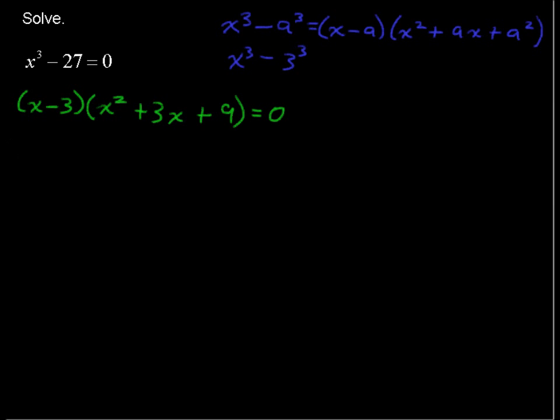It gives us two mini equations: x minus 3 equals 0, or x squared plus 3x plus 9 equals 0. If x minus 3 equals 0, then we could add 3 to each side and get what we already suspected, that x equals 3 is one of the solutions.